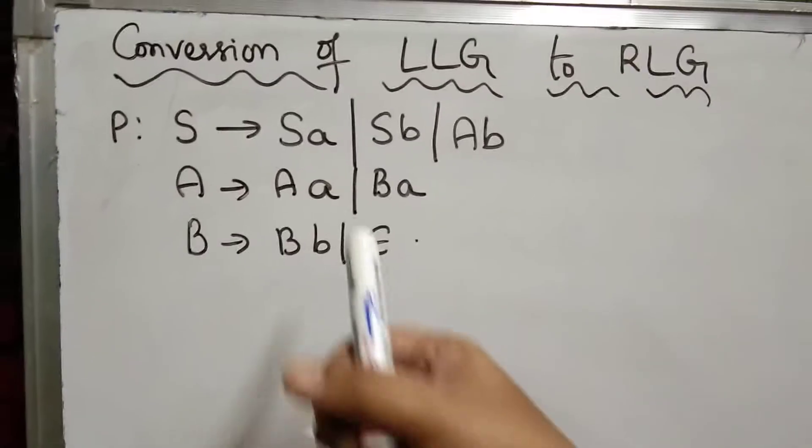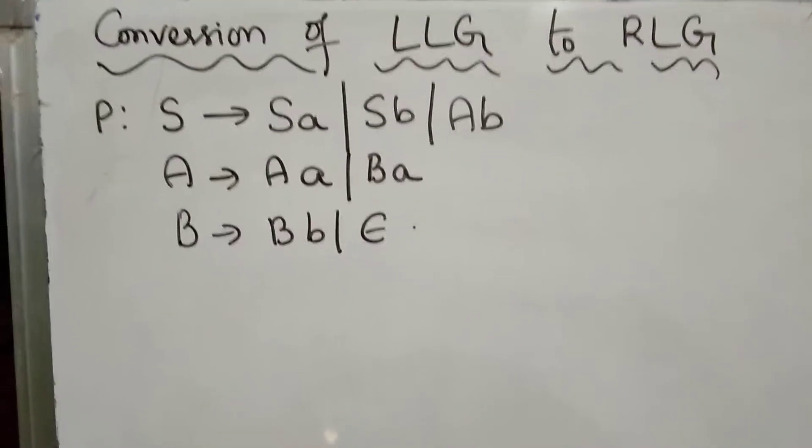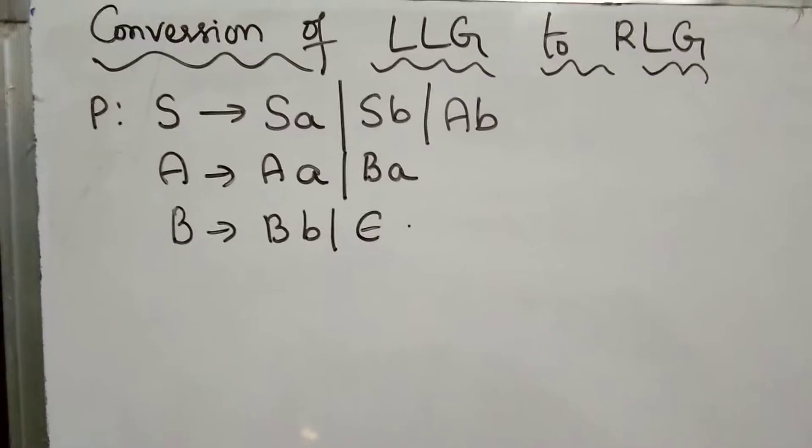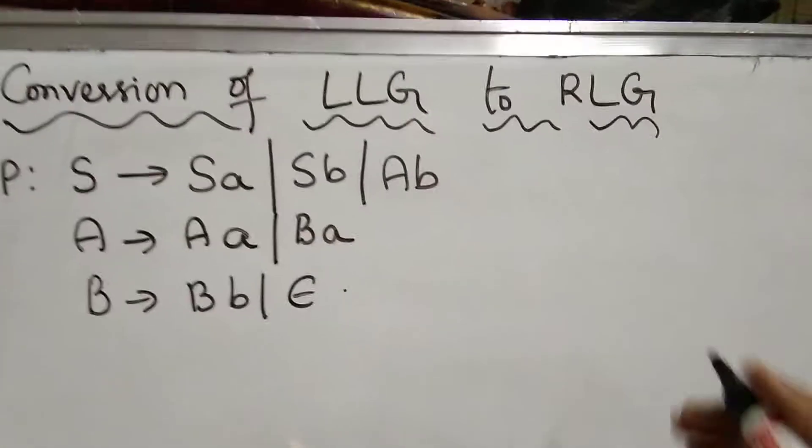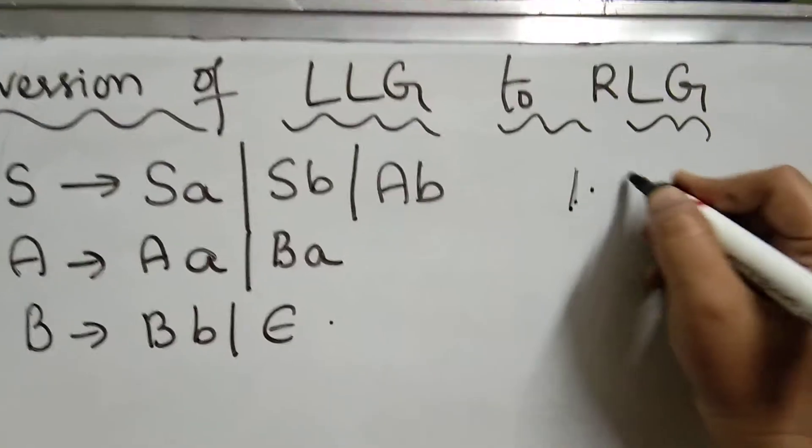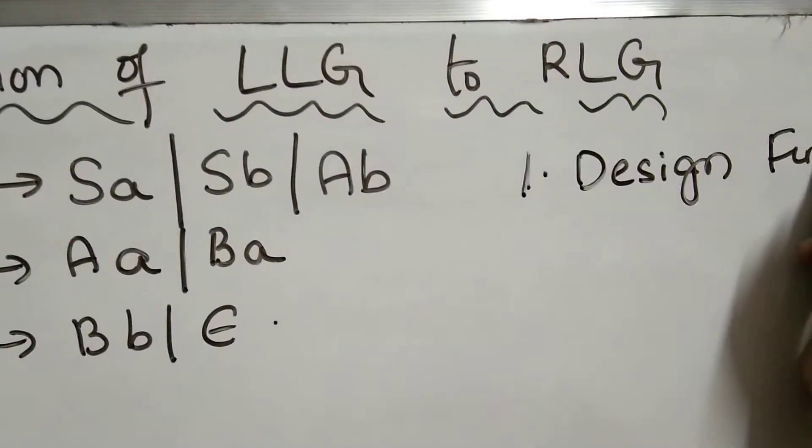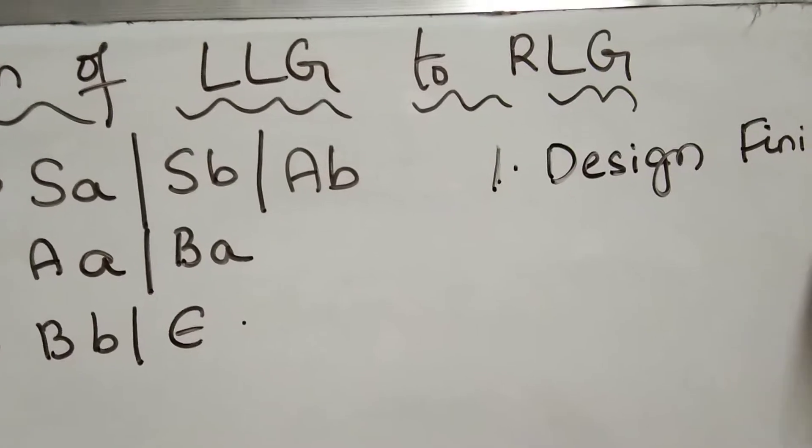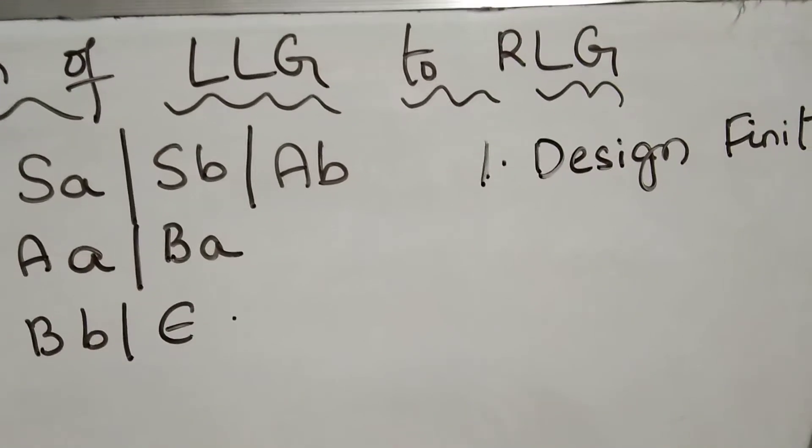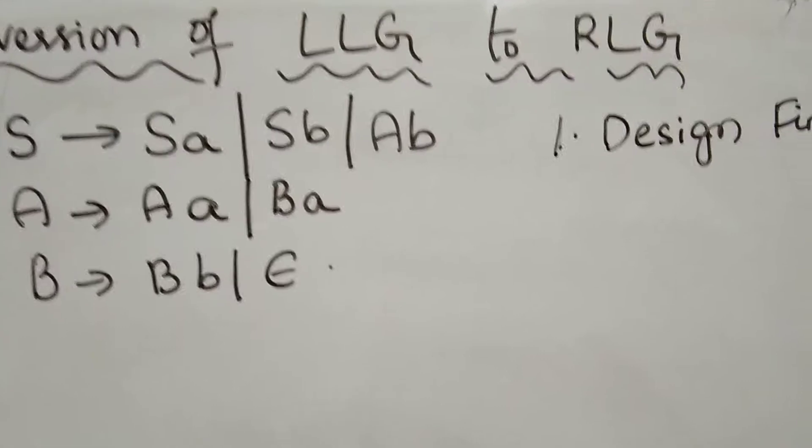Here is one example of left linear grammar. To convert left linear grammar to right linear grammar, first we design a finite automata.